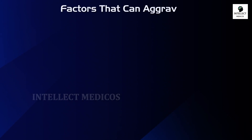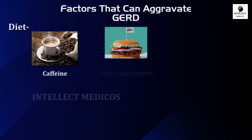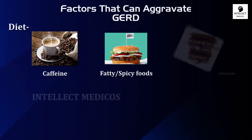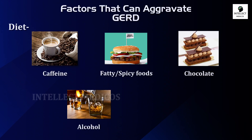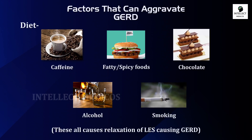Now, the factors which can aggravate GERD — the most important is diet. Intake of caffeine, fatty or spicy food, chocolates, alcohol, or smoking can aggravate GERD. These all cause relaxation of the LES, that is the lower esophageal sphincter, which is responsible for GERD. So you should avoid all these things if you have symptoms.